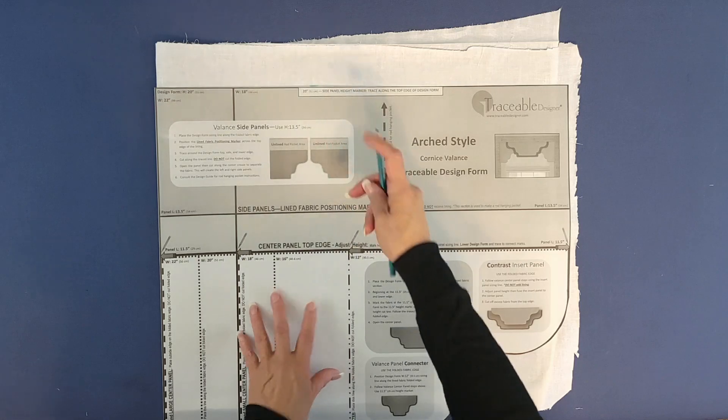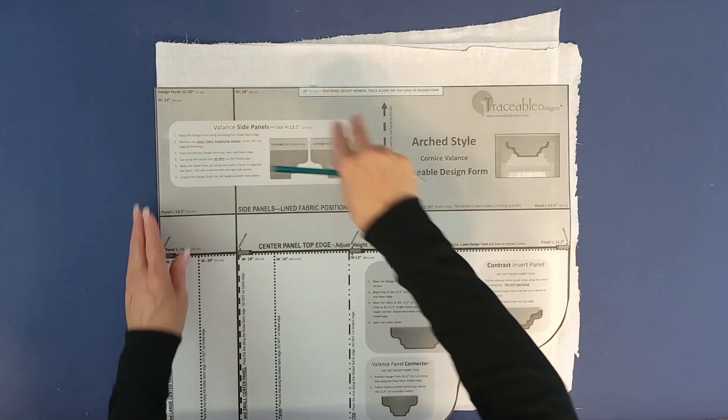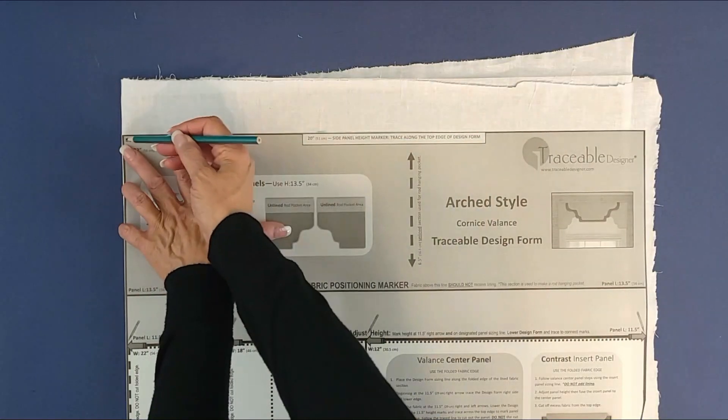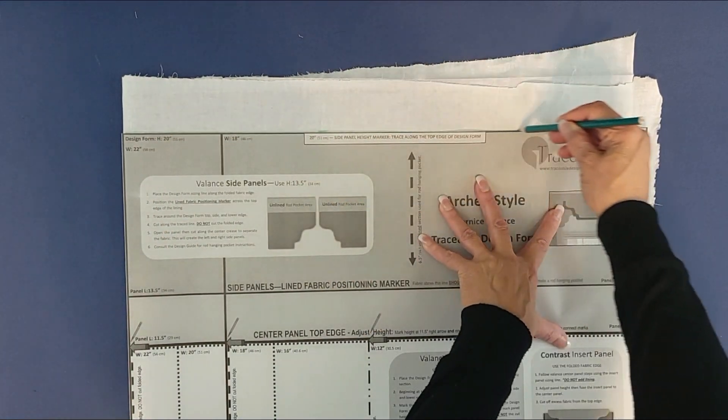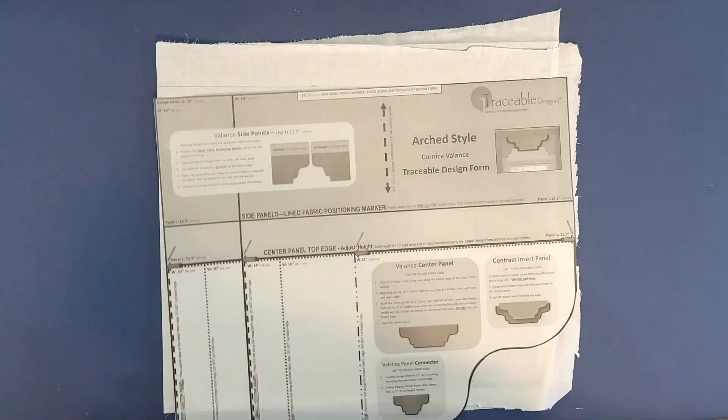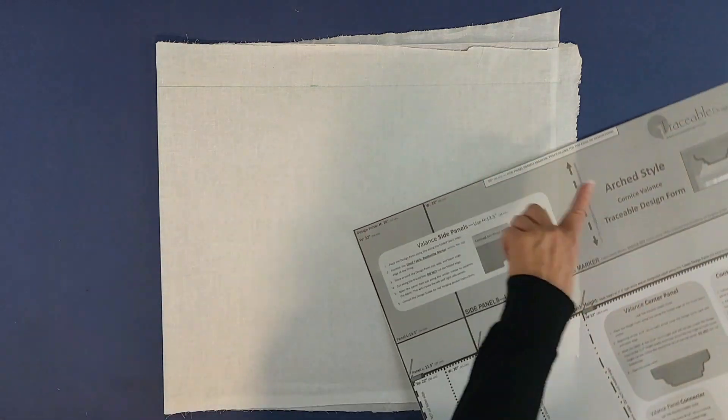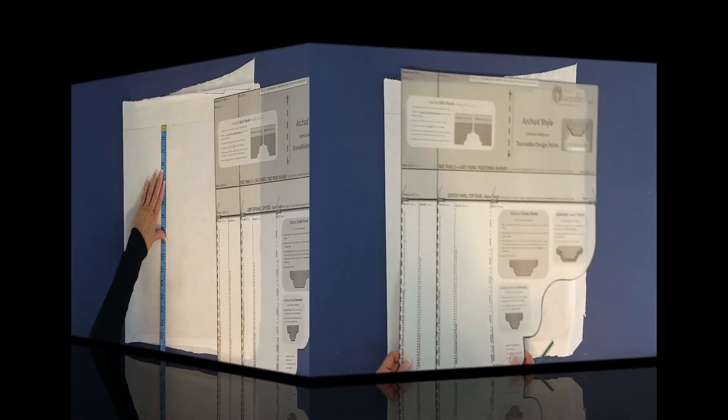Even though I'm not making a large panel, I'm making sure the design form is aligned with the fold and positioning it across my mark. In my case, the top mark indicates the 15-inch height. Then trace across the top edge of the panel so it's nice and straight.